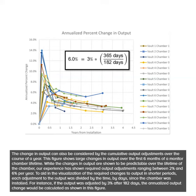For instance, if the output was adjusted by 3% after 182 days, the annualized output change would be calculated as shown in this figure.